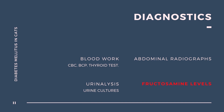Diabetes mellitus is diagnosed when the fasting levels of blood glucose concentration are significantly elevated. Cats that are stressed have the ability to temporarily raise their blood glucose to levels above normal, so repeated blood glucose tests and the testing of urine for the presence of glucose may be needed to confirm the disease.